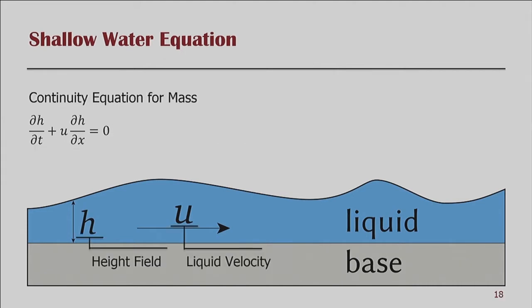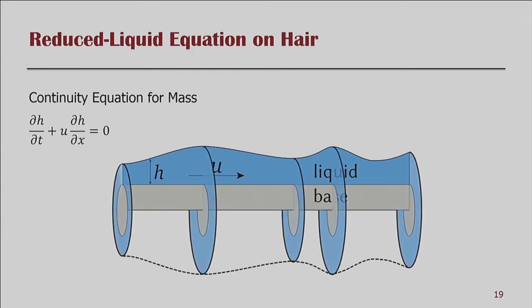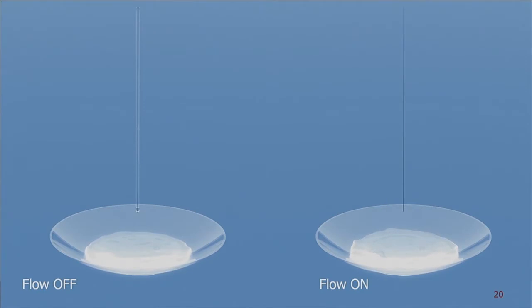Luckily, there is one method that fits all these considerations: the shallow water equation. This simple reduced model provides inertial effects, surface tension, and handling of external forces such as gravity. We also have the continuity equation for mass conservation. With constant density, it transfers to the height field along with the liquid velocity. To apply the shallow water equation onto hair, we rotate the height field around the hair center line, and instead of height, we transfer liquid area A to conserve mass. We compare flow with height field on versus off — with it on, the flow on hair is crucial to visual plausibility.